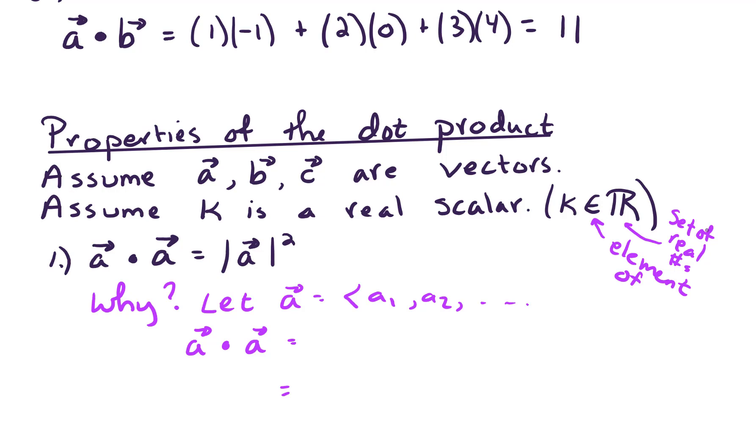Okay, so we've got several properties here, five properties in total. The first property is that a dot a equals the magnitude of a squared. In other words, a vector dot product with itself is just the magnitude squared.